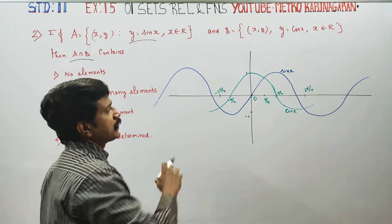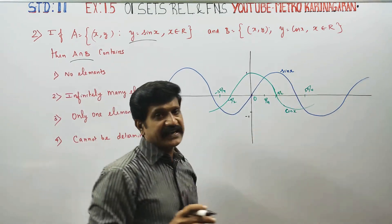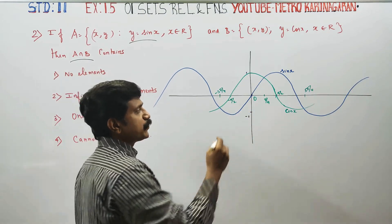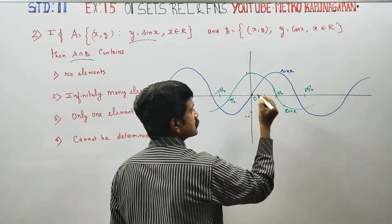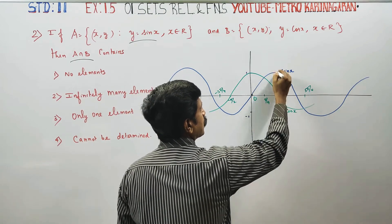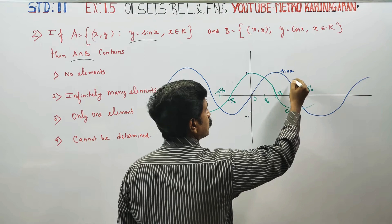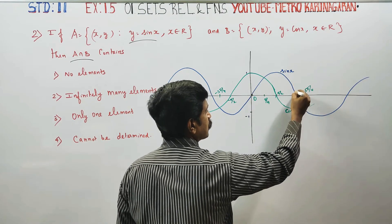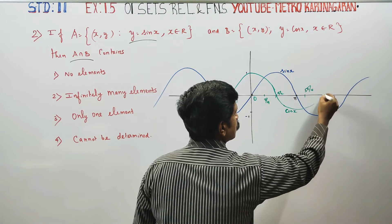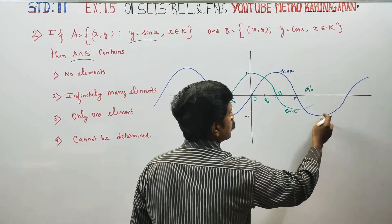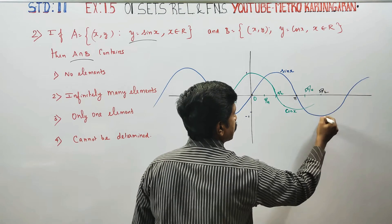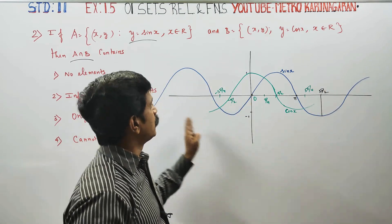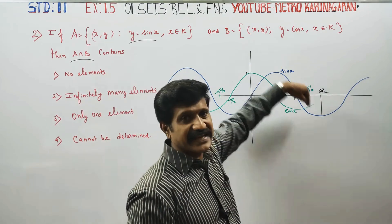The graphical representation of sin x and cos x is very easy. Sin equals 0 at the start; at 90° it is 1; at 180° it is 0; at 270° (3π/2) it is minus 1. Blue is the sin x graph.